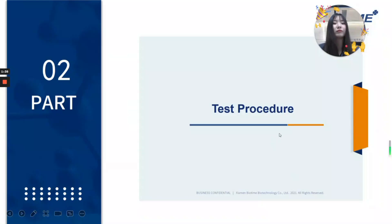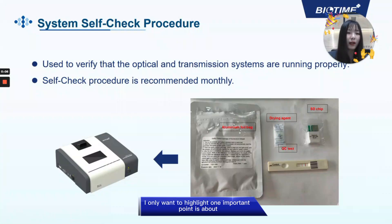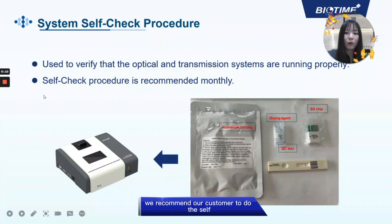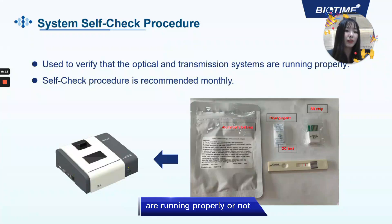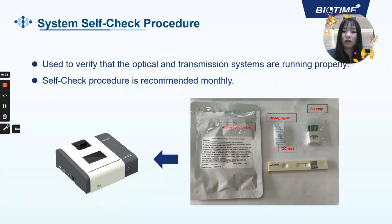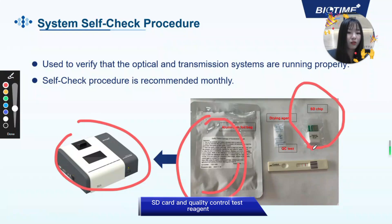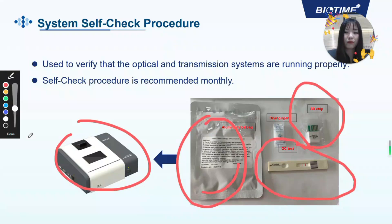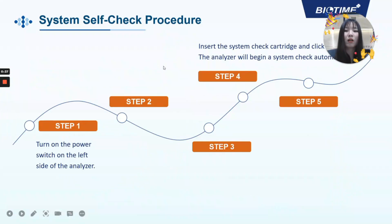Part 2 is about the Tesla procedure. On the Tesla procedure, I only want to highlight one important point: the system self-check procedure. We recommend our customers to do the self-check procedure monthly. It can monitor whether our system is running properly. Each device comes with a service bag, and the service bag contains an SD card and quality control test reagent. Next, I will show you how to do the system self-check procedure.